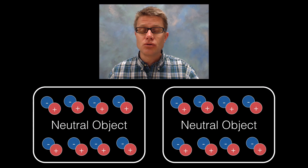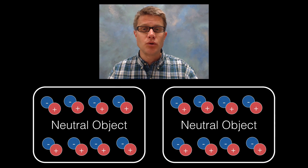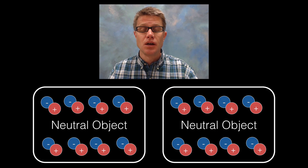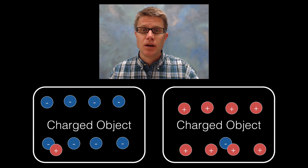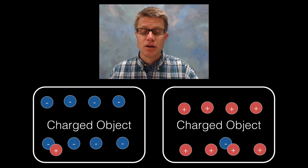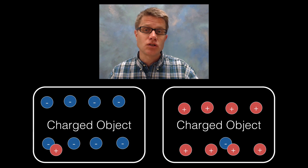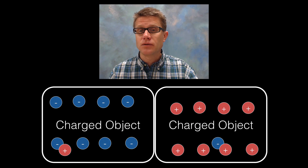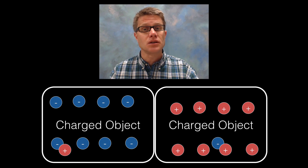Now let's say we take two neutral objects — two balloons that we haven't charged — and move them right next to each other. Nothing is going to happen; there is going to be no attraction between the two because the charges are equally distributed. Let's say we take two objects that have opposite charge: the one on the left has a negative charge and the one on the right has a positive charge. There will be an attractive force between the two — opposites attract.